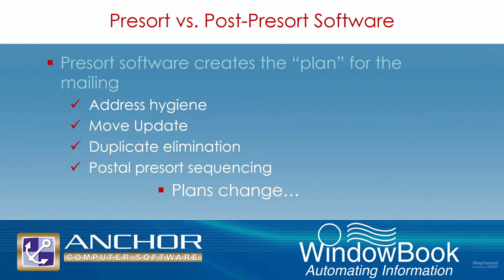For purposes of this webinar, pre-sort software is the software used to prepare the initial plan for a mailing, including address hygiene and update functions, as well as sorting address records into a sequence specified by the postal service to meet Domestic Mail Manual (DMM) requirements and take advantage of postage discounts. One of the key outputs of this process is the mail.dat file set — a group of individual sub-files which collectively comprise a relational database containing all details about the mailing except for the actual names and addresses of mail recipients.